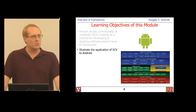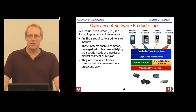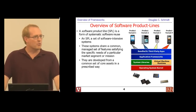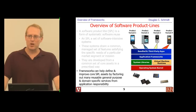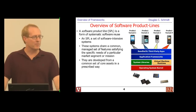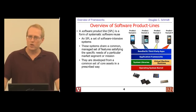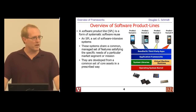Before we get into scope commonality and variability analysis, let's talk a little bit about something called a software product line. A framework was an integrated set of classes that provide a reusable architecture for a family of related applications. The idea there was systematic reuse, parts that work together, parts that provide inversion of control, domain-specific structures and behaviors, and semi-complete applications.